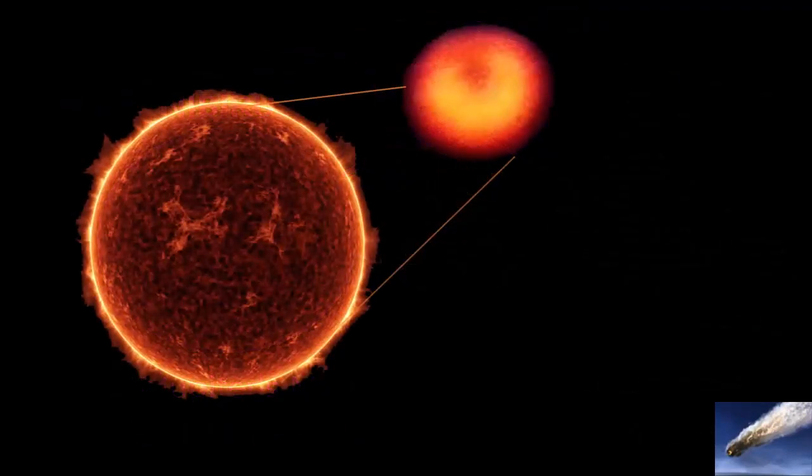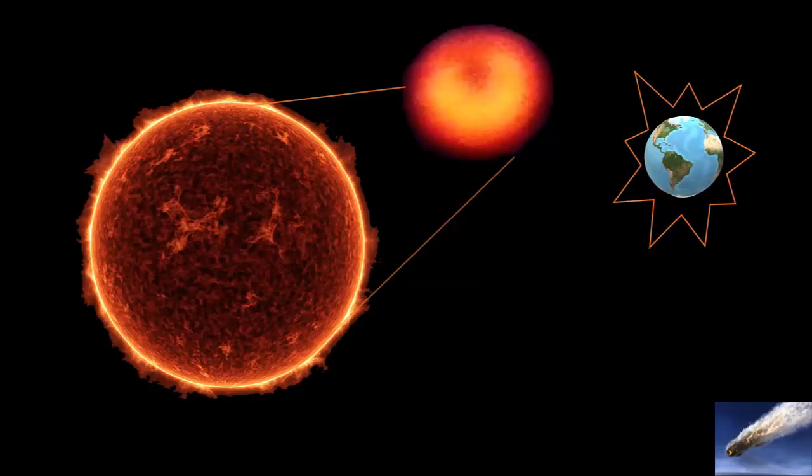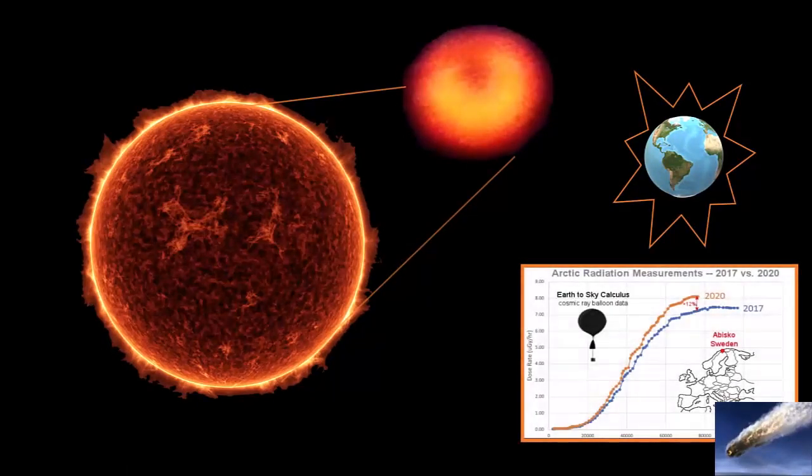If something quite large is pulling at the Sun's core and influencing its magnetic poles, it could explain the tremendous escalation of cosmic radiation that is entering the Earth's atmosphere over the Arctic in just the past three years, showing a 12% influx in cosmic rays entering the stratosphere during this time period.